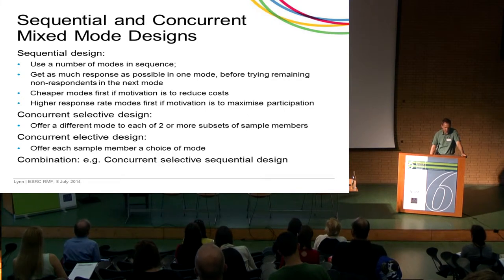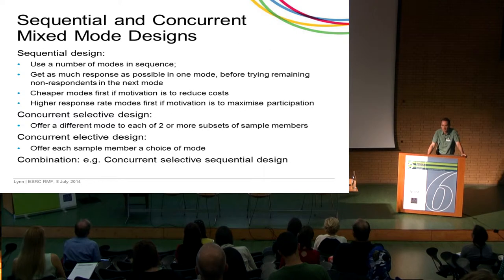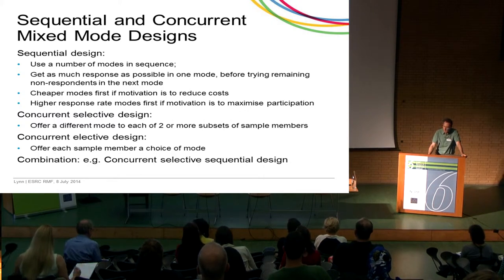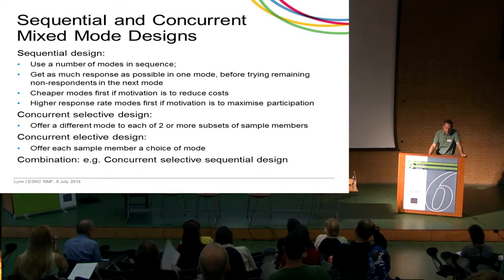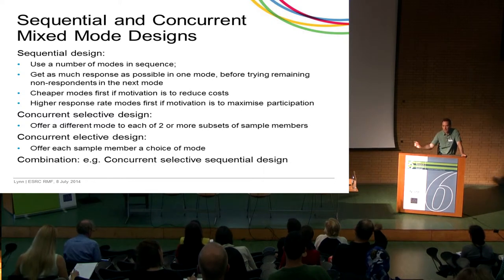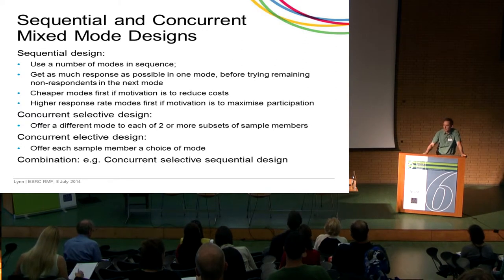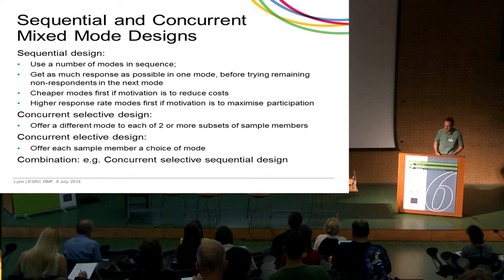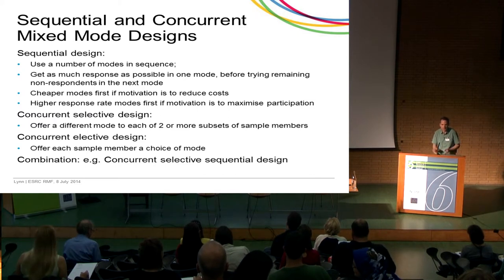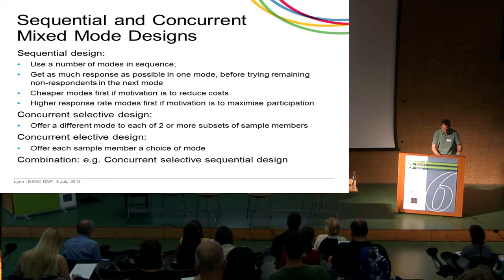On the other hand, if our motivation is to maximize participation, we're more likely to go for the highest response-rate mode first, get as many people as we can, and then try to get some more in a different mode. Some designs are concurrent, meaning we use multiple modes at the same time — either selective, targeting a particular mode at one subset of our sample and a different mode for another, or elective, giving sample members an explicit choice of how they want to respond.